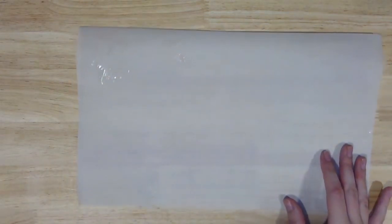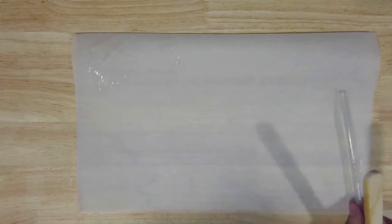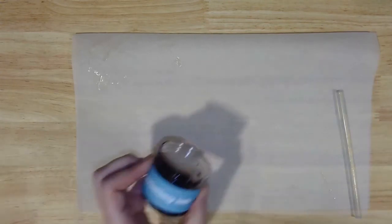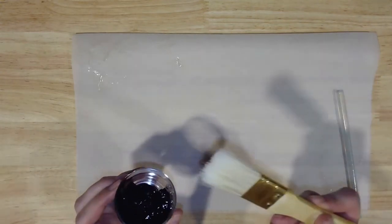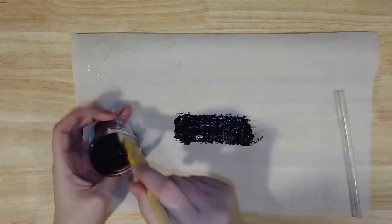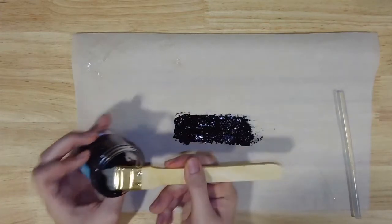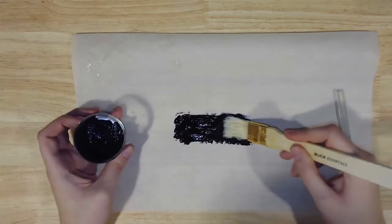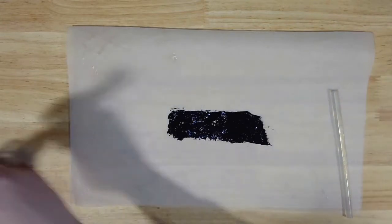Once you're happy with your block, we can start printing. Grab your cards, printing ink, and hot glue stick, which we'll be using in place of a rubber rolling tool called a brayer. You'll also need some scrap paper, or if you have it, some waxed or parchment paper. We also grabbed a paintbrush to help us get the ink out of the jar, but you could also pour it or use a spoon. This will probably get a little messy no matter what you use.